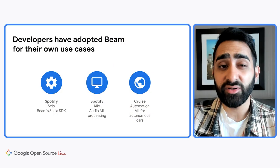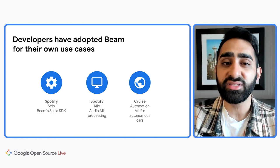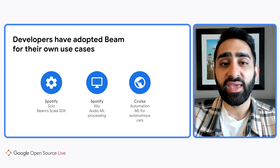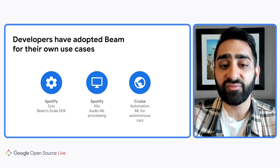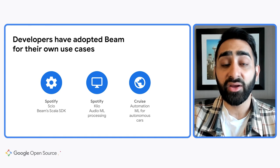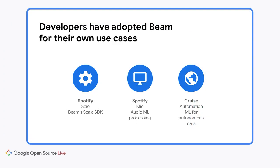Beam allows you to run on a variety of different execution engines from Google Cloud Dataflow to Apache Flink, Apache Spark, Apache Apex, and Apache Gear Pump. This allows you to move your data processing from any backend, whether that be on the cloud using your compute instances or on-premise where you might have just a cluster of compute. So let's talk about some of the use cases and some of the ways customers have adopted Beam. Spotify uses an SDK called Scio, which is effectively a Scala wrapper on the Java SDK. This enables their entire organization of hundreds of developers to leverage the Beam model in their language of choice.